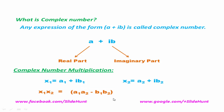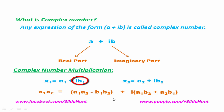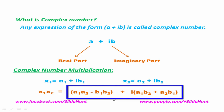Next we calculate the imaginary part of X1 times X2. Give here a plus sign and I, which indicates the imaginary part. Then multiply the real part of the first complex number with the imaginary part of the second complex number, that is A1 times B2, then plus the imaginary part of the first complex number multiplied with the real part of the second complex number, that is A2 times B1. This is the resulting number we get after multiplying two complex numbers.